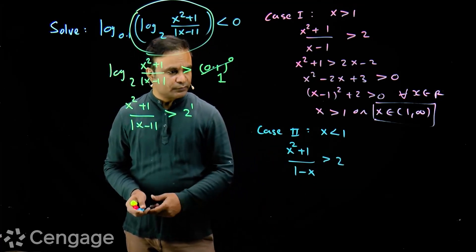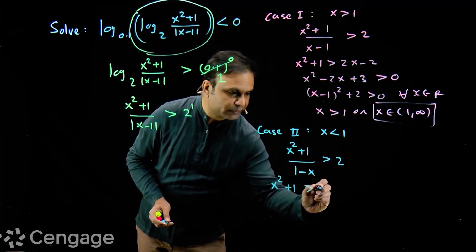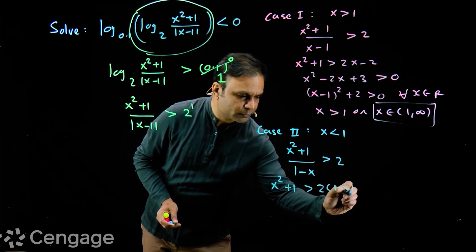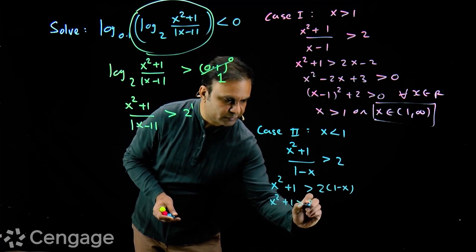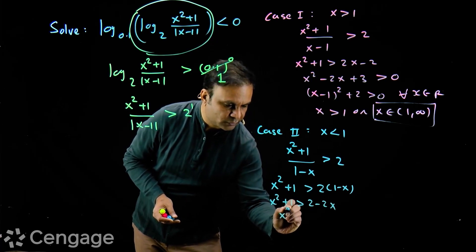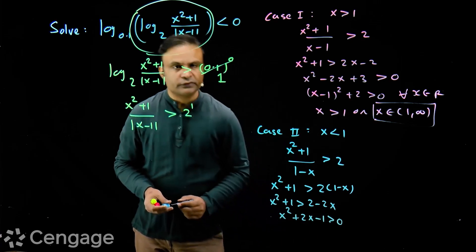1 minus x is positive. So cross multiply with 1 minus x without changing inequality orientation. We have x square plus 1 greater than 2 minus 2x or x square plus 2x minus 1 greater than 0.